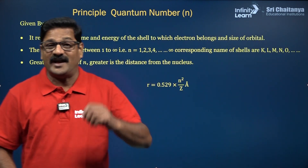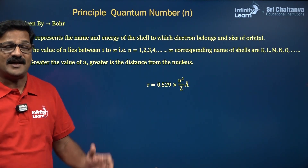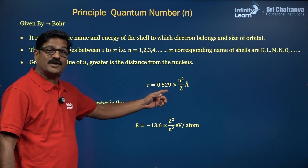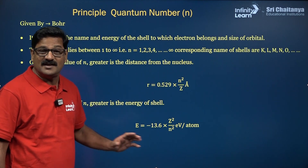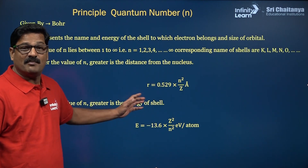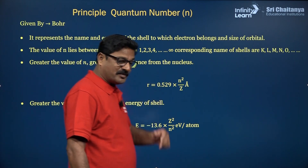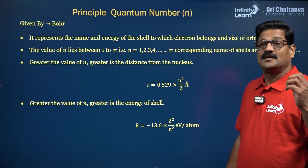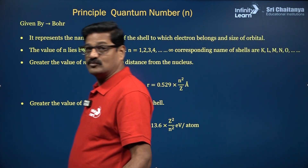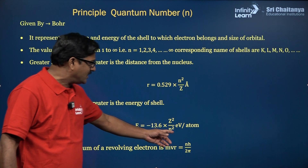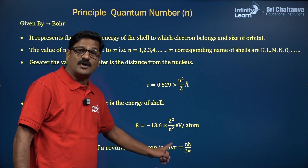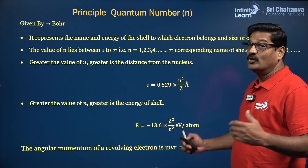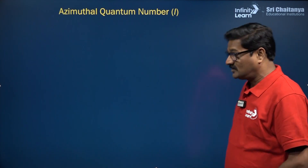The principal quantum number signifies the electron energy in an atom. The radius is given as 0.529 × N²/Z angstrom units, and energy is given as −13.6 × Z²/N² electron volts. It also signifies the electron angular momentum in a circular path, given as NH/2π — this is the quantization of angular momentum.